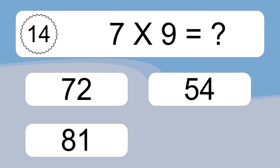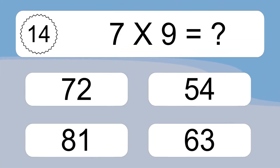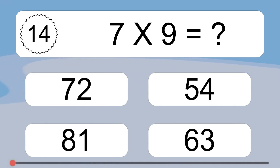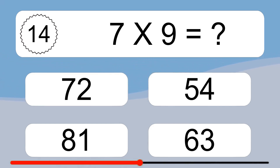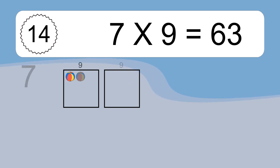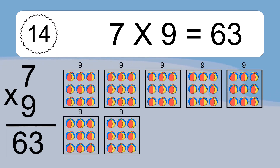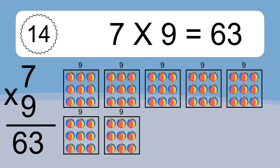7 times 9 equals what? 7 times 9 equals 63. We have 7 boxes and each box has 9 colorful balls inside. If you count all the balls in all the boxes together, you will have 7 times 9 balls. This equals 63 balls.